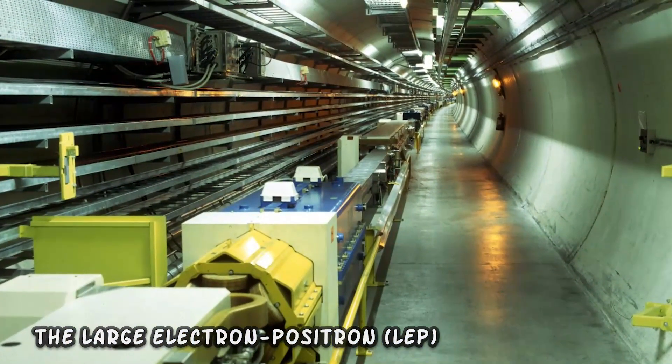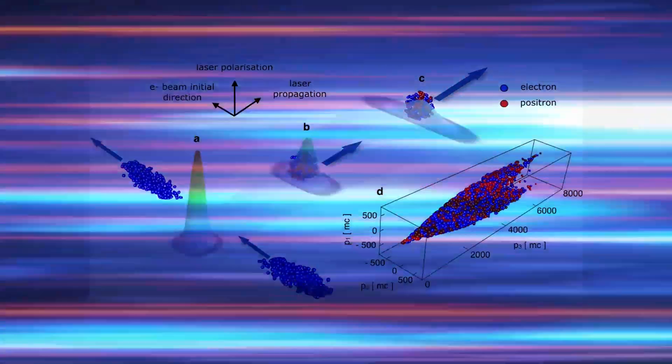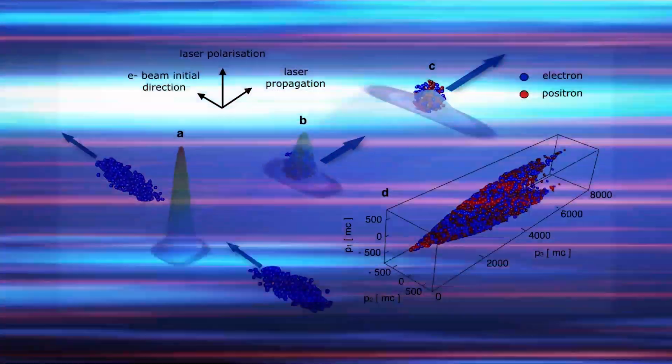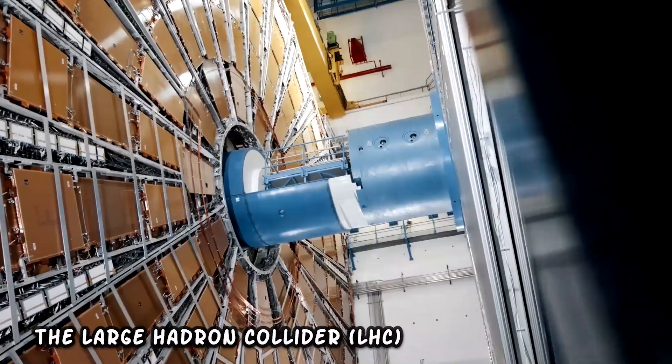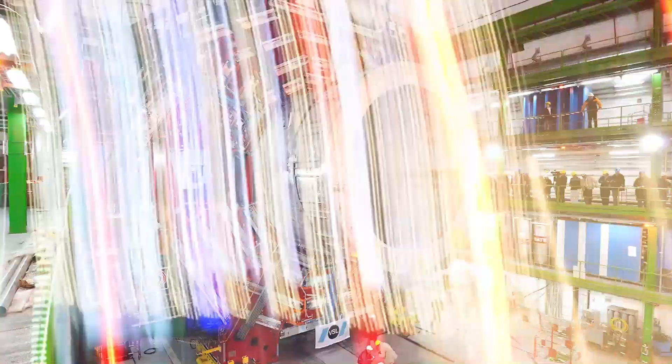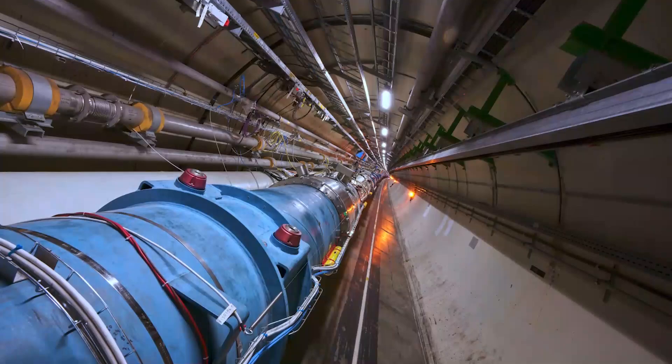The Large Electron-Positron Collider was inaugurated in 1989, accelerating electrons and positrons to 45 GeV per beam. The Large Hadron Collider was introduced in 2008, extending the reach of high-energy physics experiments to a new energy plateau.